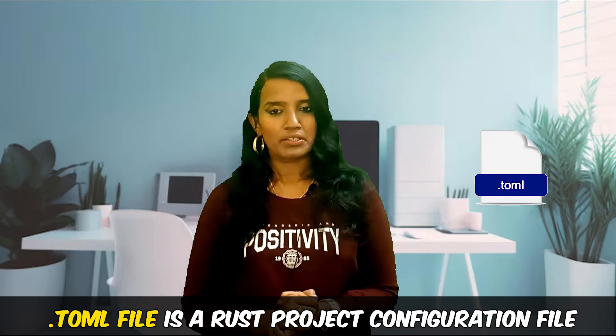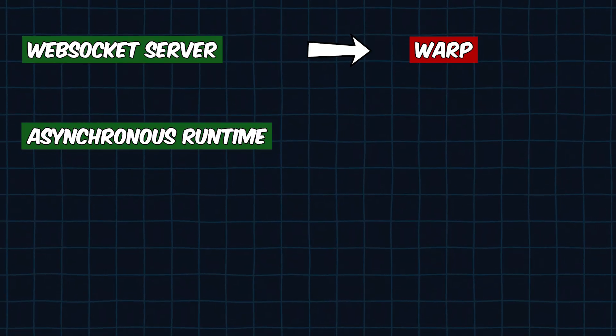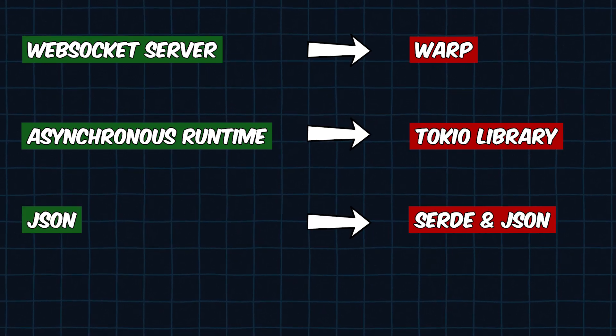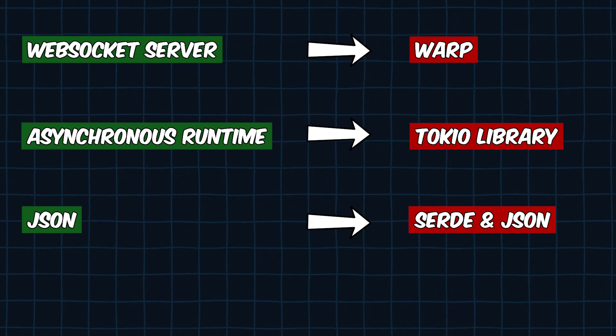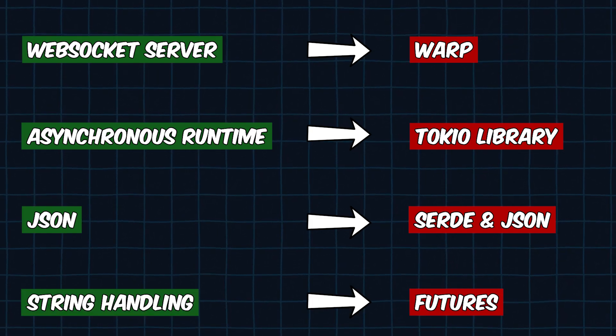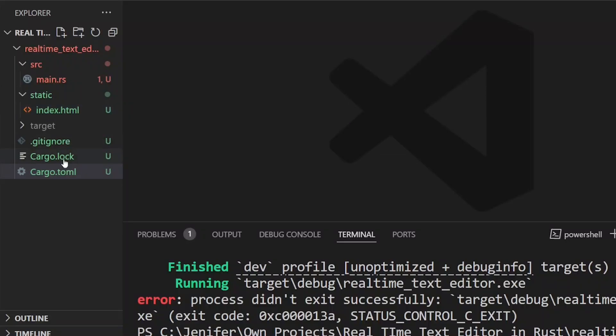Step number two: Imports and dependencies. In the project, we can add all the dependencies in the cargo.toml file. It's a configuration file, just like an INI file. Here we have a warp library for the WebSocket server, an asynchronous runtime via the Tokio library, and serde and serde_json for JSON transactions, along with the serde derive feature. At the end, futures is for stream handling. You can add all the modules here.